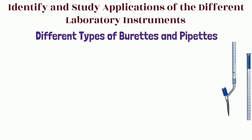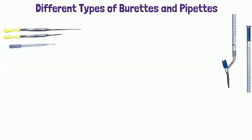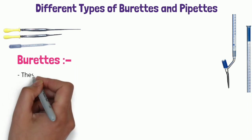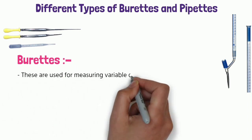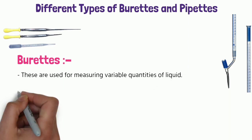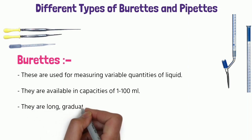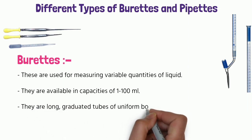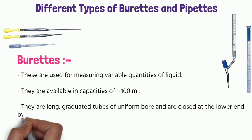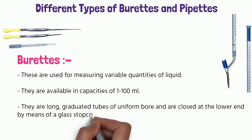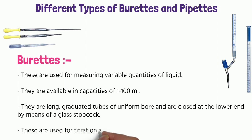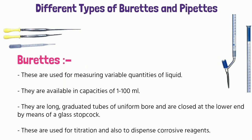This is a buret — you can see it in this picture. Burets are used for measuring variable quantities of liquid. They are available in capacities of 1 to 100 ml. They are long graduated tubes of uniform bore, closed at the lower end by means of a glass stopcock. These are used for titration and also to dispense corrosive reagents.